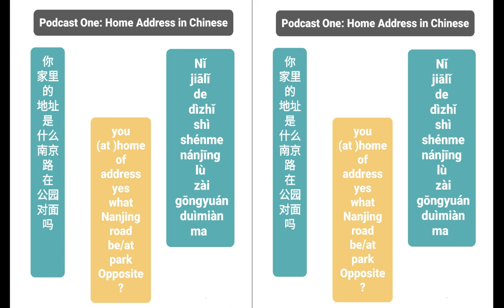So 你家里的地址 means 'your home address.' Now 是什么 — in this case we don't say 'where is it,' we say 'what is your home address?' One more time please: 你家里的地址是什么？ — What is your home address?